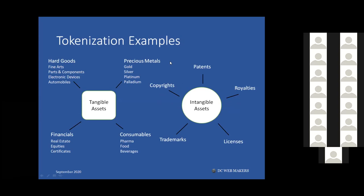There are many examples of tokenization, but the starting point is identifying what your assets are. In finance and accounting, there are two major asset types — tangible and intangible. Tangible assets include hard goods, fine art, parts, and components. In finance: real estate, equities, precious metals like gold and silver. And consumer goods like pharma and food.